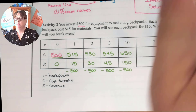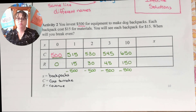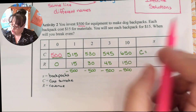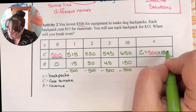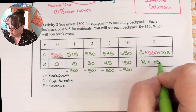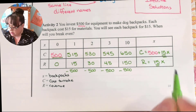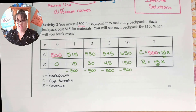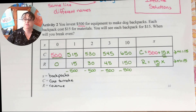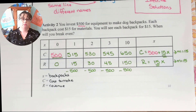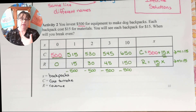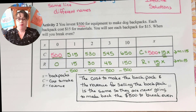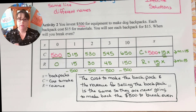Why is that? Think about what's really happening with x every single time. Your cost was that initial $500 plus $15 for every backpack. Your revenue is $15 for every backpack. Remember y equals mx plus b? In both of these, your slope is $15. So are you ever going to make back your money? No. You need to start charging more for your backpacks. The cost to make the backpack and the revenue for selling it are the same, so they're never going to be able to make back that $500 and break even.